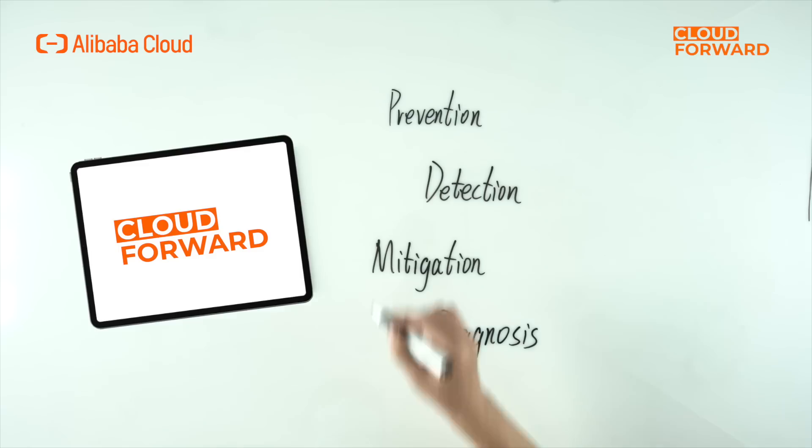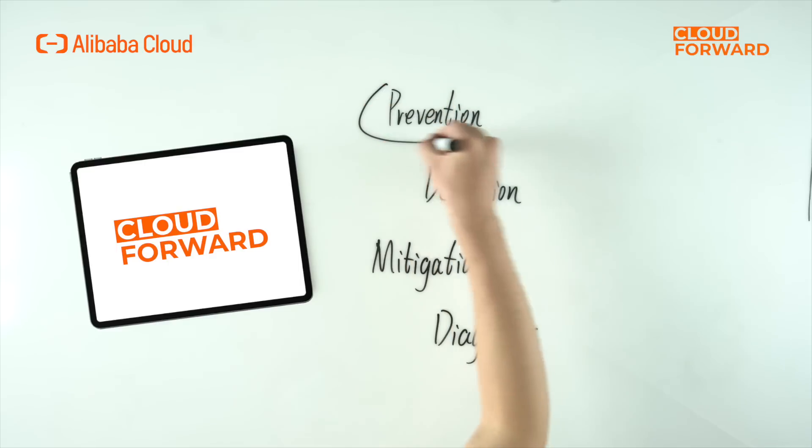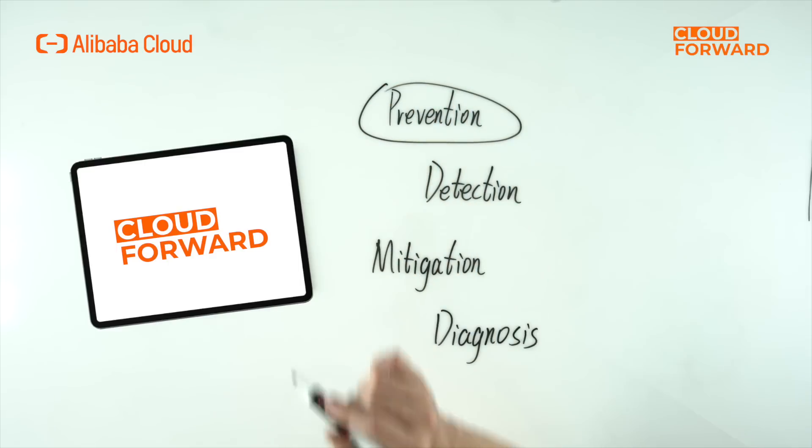From the infrastructure perspective, building a highly available and robust application requires attention to four main aspects: prevention, detection, mitigation, and diagnosis.